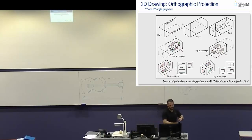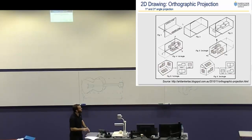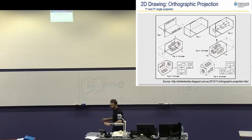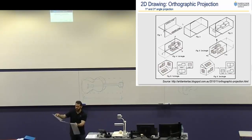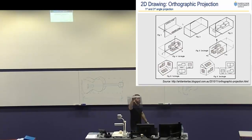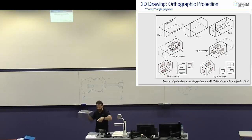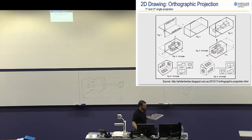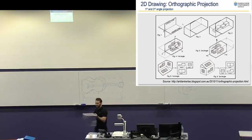There are even more rules than just not putting views all over the place, because there are two main options: first angle projection and third angle projection. I don't know what happened to second angle projection, but it doesn't really exist these days. The way these things actually work is how this box is interpreted when you draw the drawing. I'm going to use Yorick here — he's my little 3D printed skull. He's going to help me do this. I'm going to do third angle projection first because it's the one we're going to use and it's the most common, particularly in Australia.